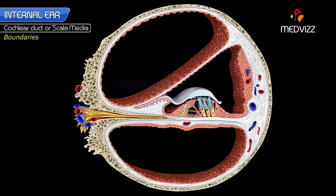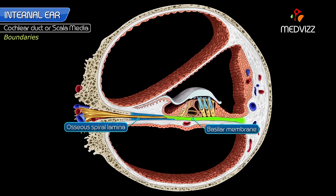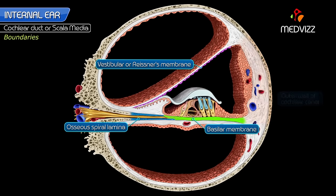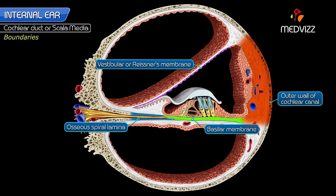The base of the cochlear duct is formed by the osseous spiral lamina medially and the basilar membrane laterally. The roof is formed by the vestibular or Reissner's membrane, which passes from the upper surface of the spiral lamina to the wall of the cochlea. Laterally, the duct is bounded by the outer wall of the cochlear canal.